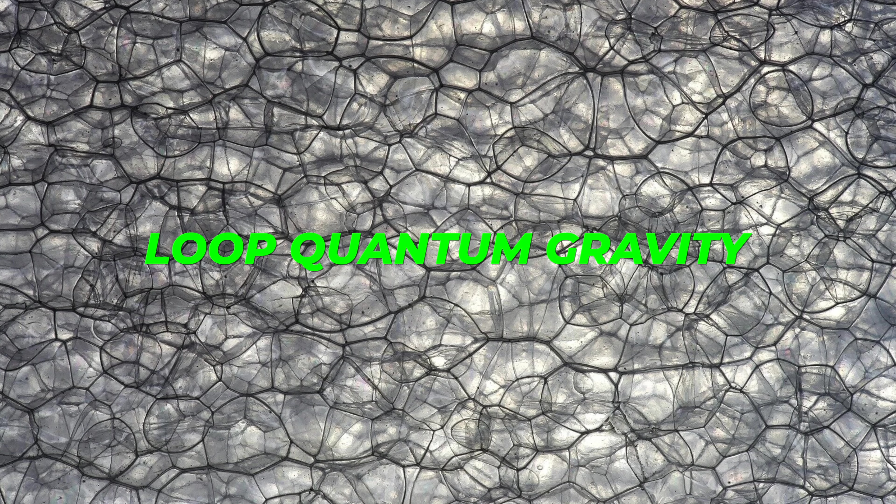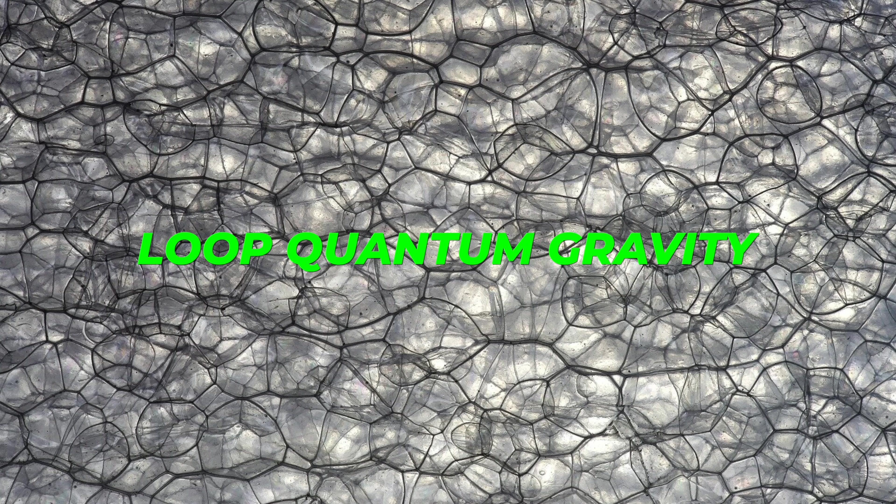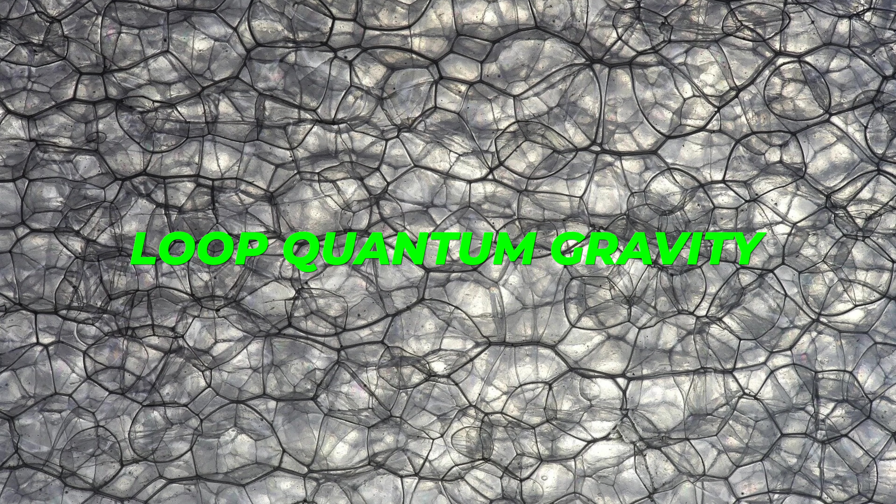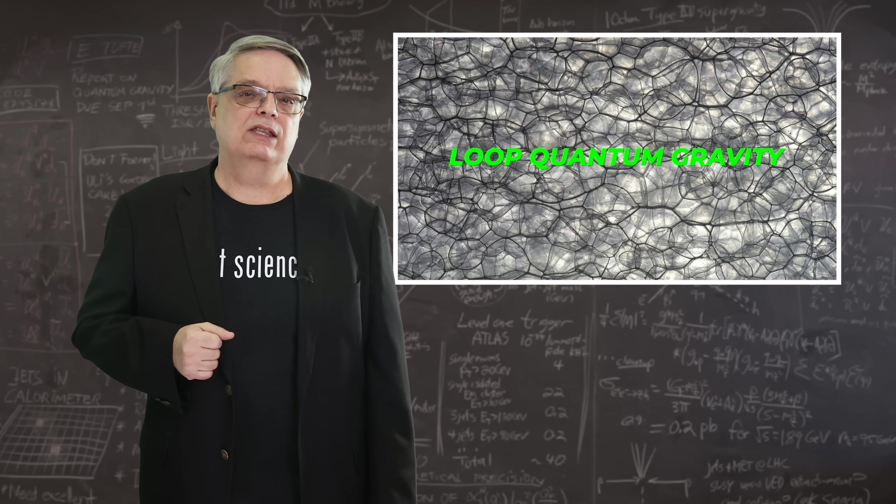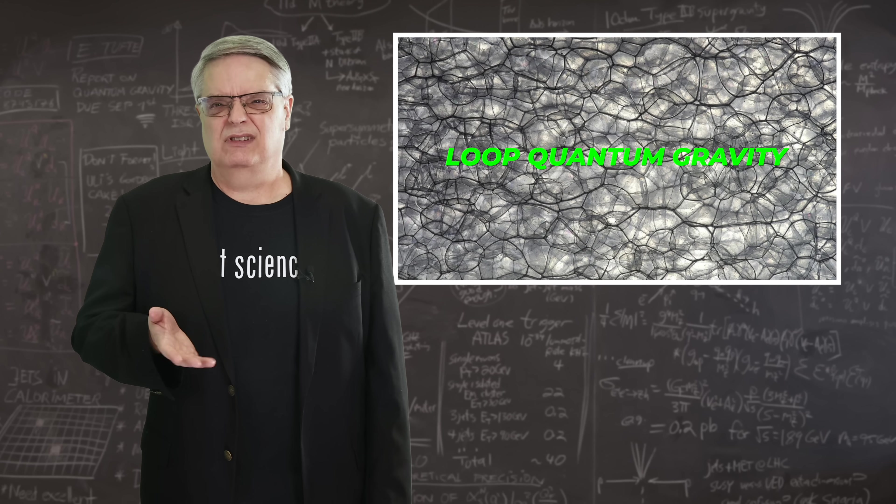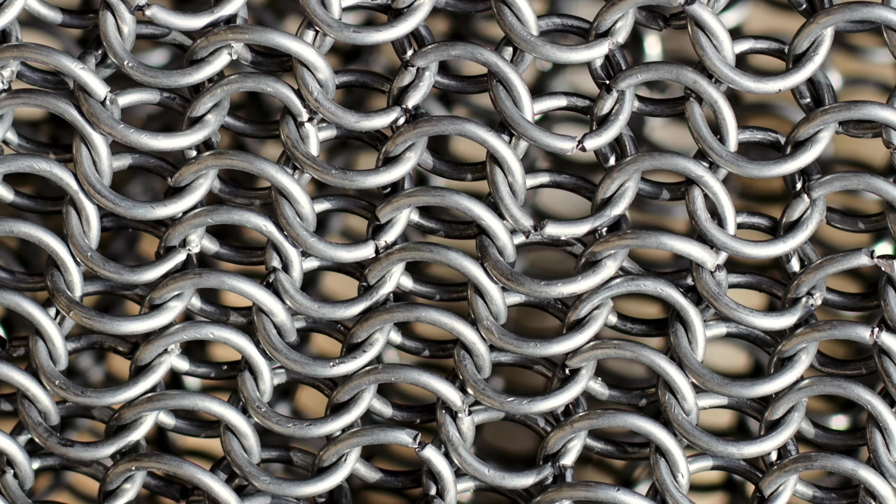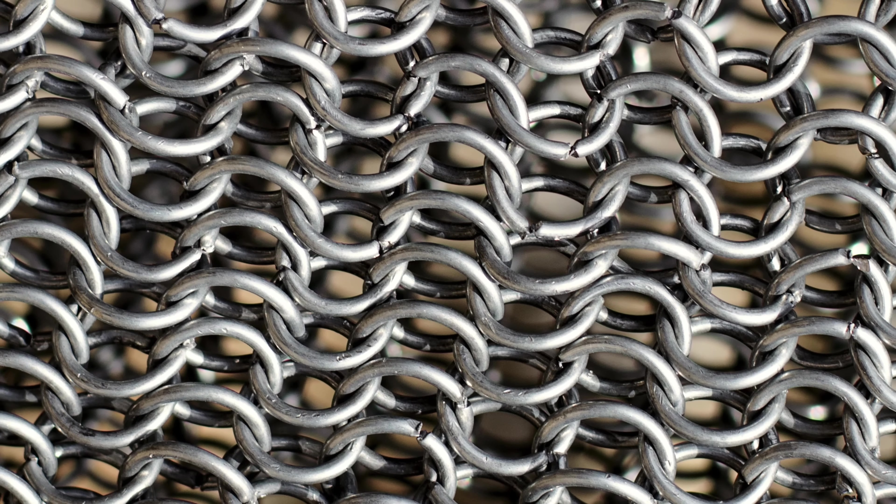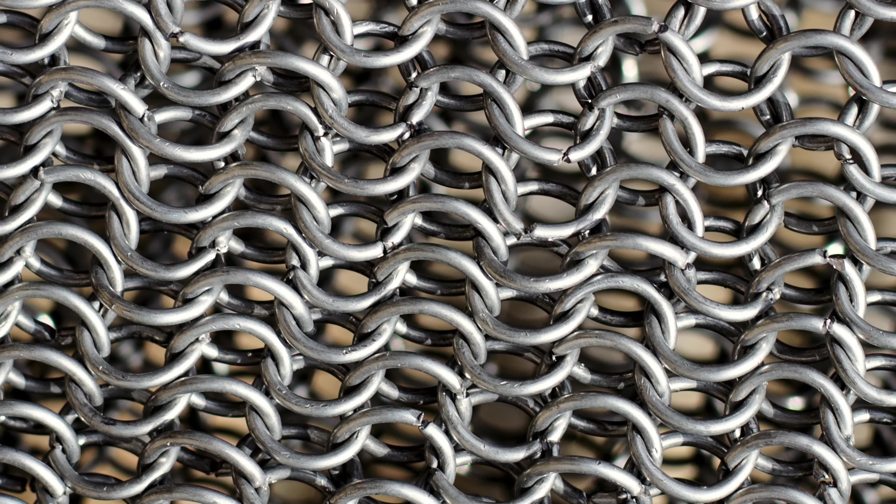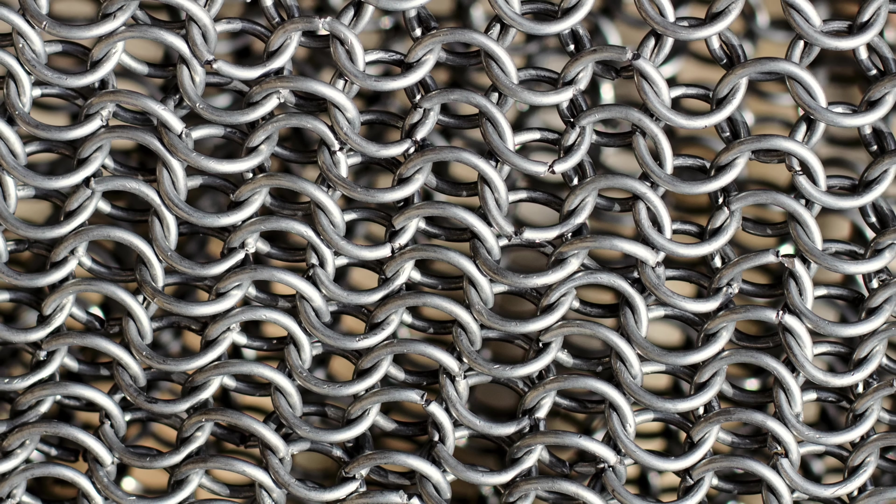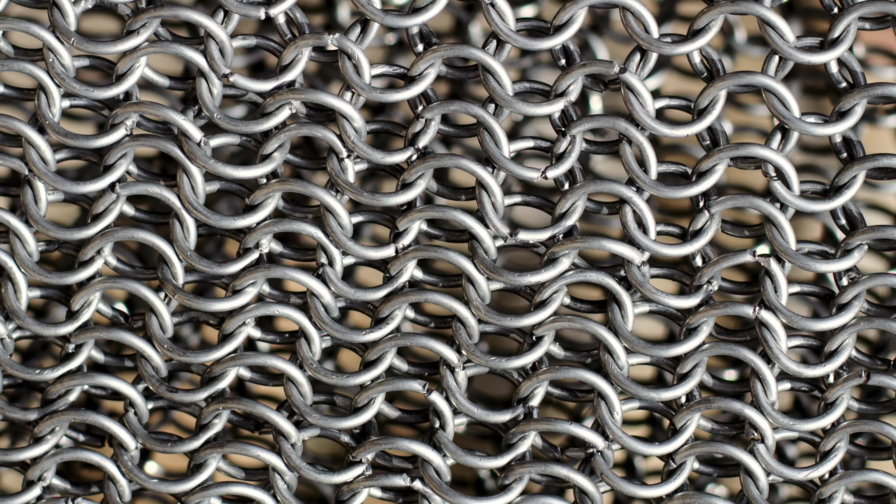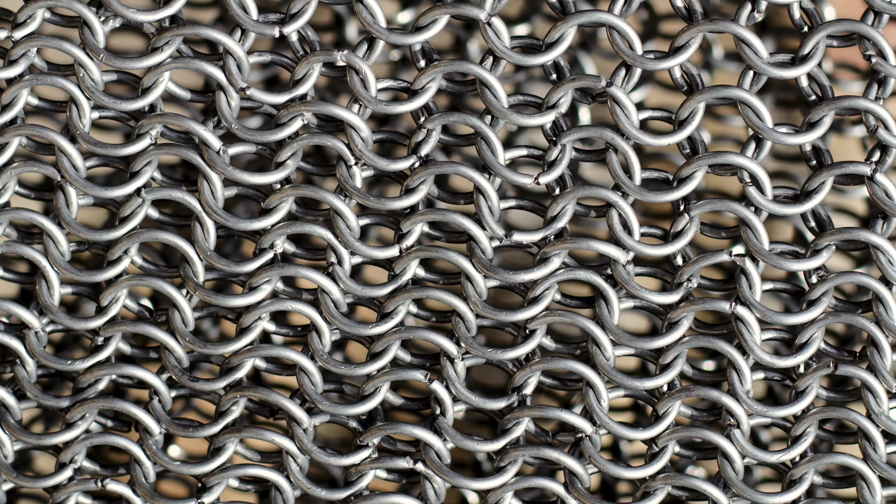Then there's the idea of loop quantum gravity. In this theory, spacetime is quantized, which means there is a shortest distance and a briefest duration of time. In this theory, these little bits of space are attached together. I kind of imagine it like chain mail, with the individual loops held together to make a piece of armor. This paradigm is more like Einstein's model, in that it is geometrically motivated, but it suffers from the fact that a path from loop quantum gravity to general relativity still eludes us.